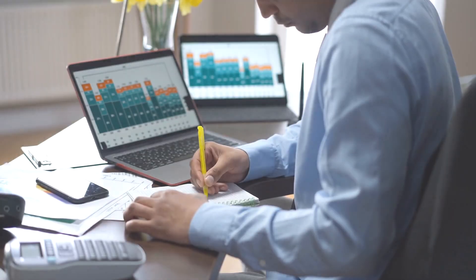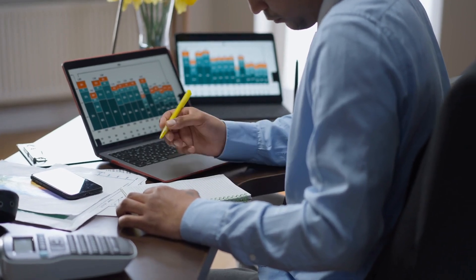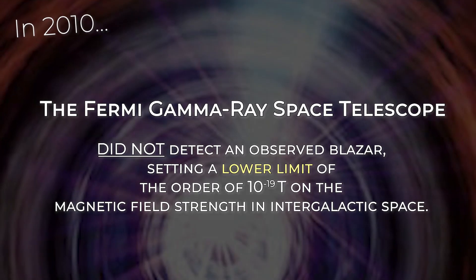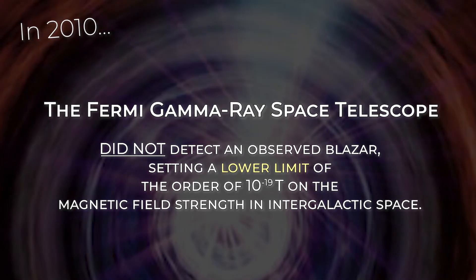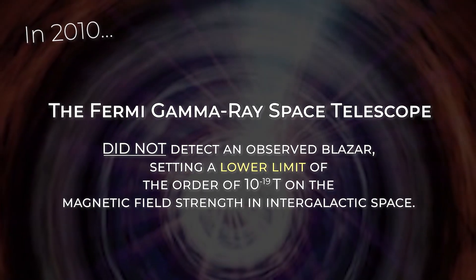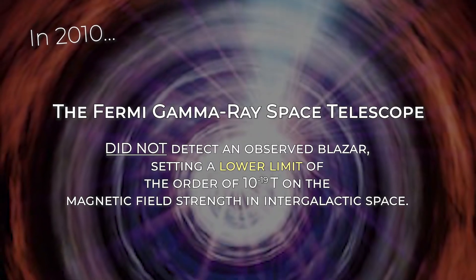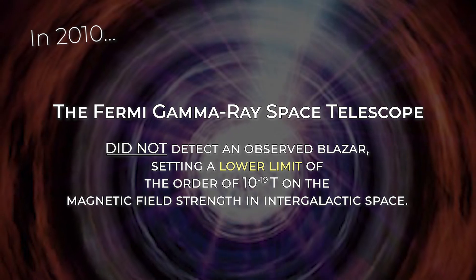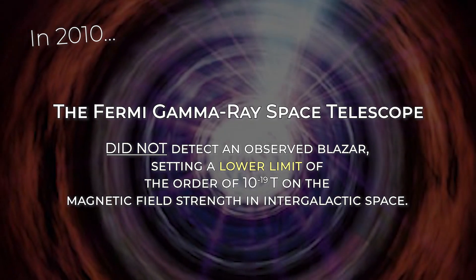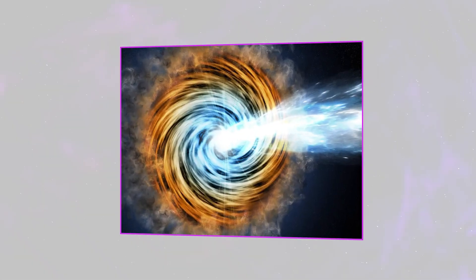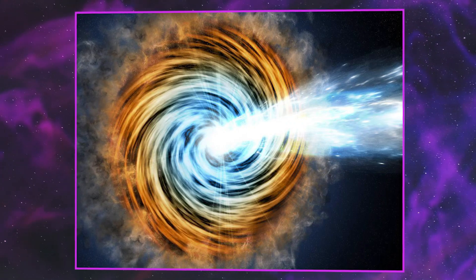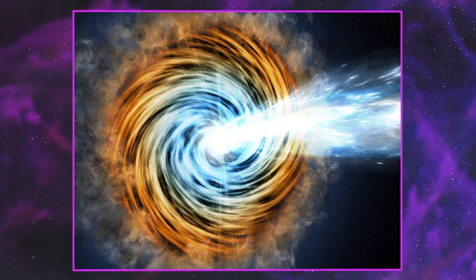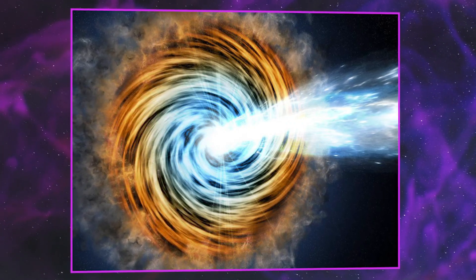An interesting study done over a decade ago published what's called a lower limit on the amount of cosmic magnetism. This is fascinating. By looking at the non-observation of what are called TeV blazars and their halos, we don't see an effect how one would expect to see around very distant blazars, which are highly energetic nuclei of active galaxies.